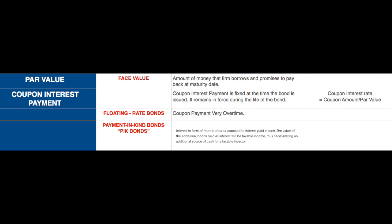The coupon payment, or coupon interest rate: the coupon payment is equal to the interest payment. Every bond requires a company to pay a fixed number of dollars of interest every year, or more typically every six months. When this coupon payment is divided by the par value, the result is the coupon interest rate. The coupon payment, which is fixed at the time the bond is issued, remains in force during the life of the bond.